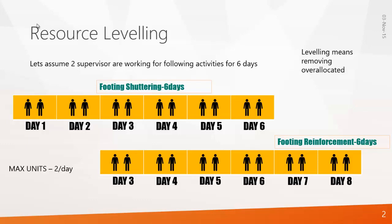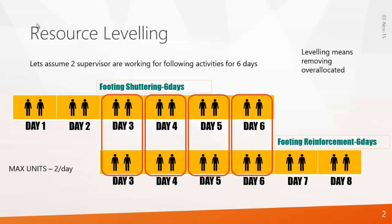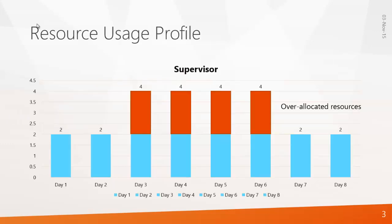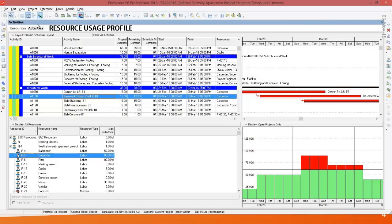In such cases, on day 3, there will be an over-allocation in the project — meaning you require 2 more supervisors to complete the task. When you go into the software, the program will display a graph showing a red color bar indicating over-allocation on day 3, 4, 5, and 6. In the software, when you go to the resource usage profile option, you can see the same graph. All these things have been explained in my previous video, so please watch that.